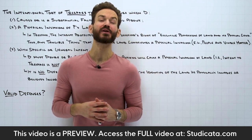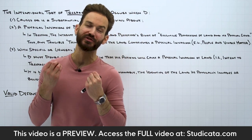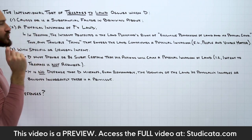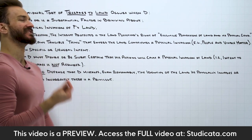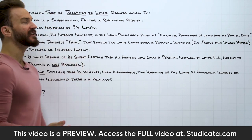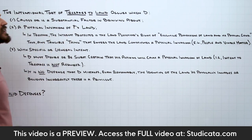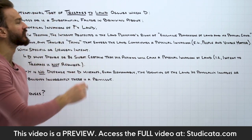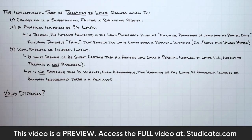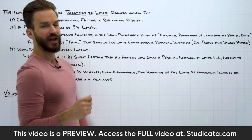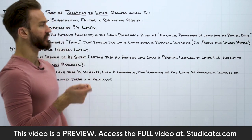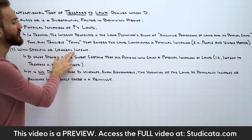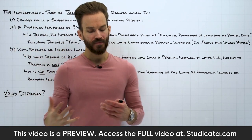In this lesson, we're going to go over the traditional elements of the intentional tort of trespass to land. The intentional tort of trespass to land occurs when the defendant causes or is a substantial factor in bringing about a physical invasion of the plaintiff's land with specific or general intent.